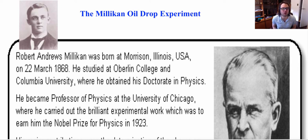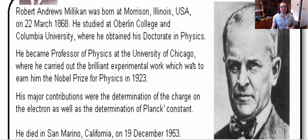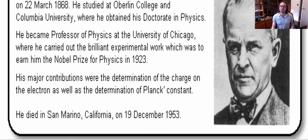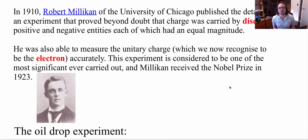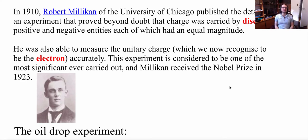Then along came a scientist named Robert Andrews Millikan, who came up with the Millikan oil drop experiment. This experiment helped determine Planck's constant, but mainly decided the charge of an electron and helped figure out what its mass was. If we knew the charge, we could find the mass, and vice versa. In 1910, Robert Millikan of the University of Chicago published details proving that charge was carried by discrete positive and negative entities of equal magnitude. He was also able to measure the unitary charge, which we now recognize as the electron. This experiment is considered one of the most significant ever carried out, and Millikan received a Nobel Prize for this.